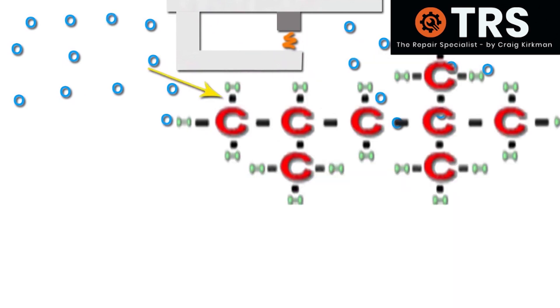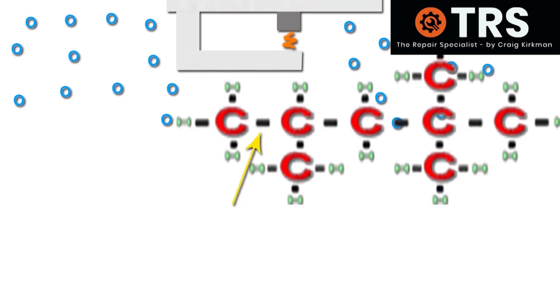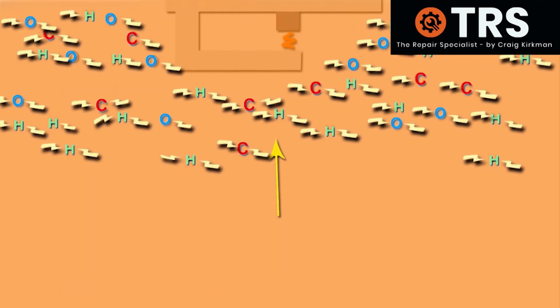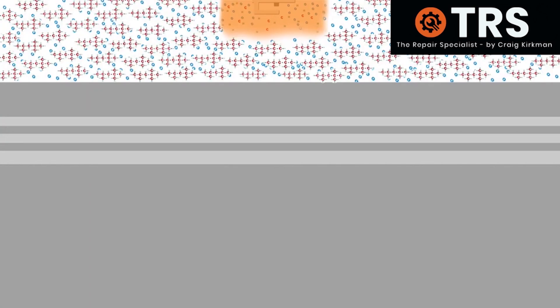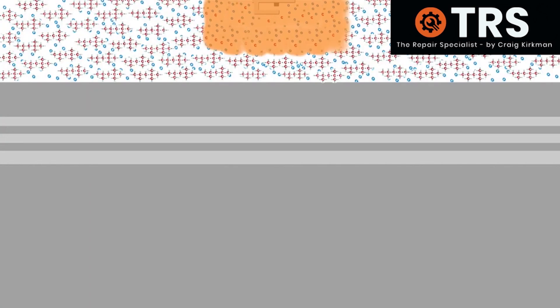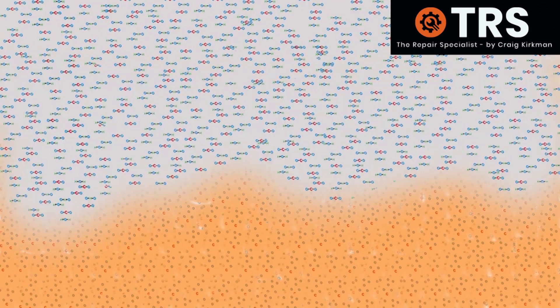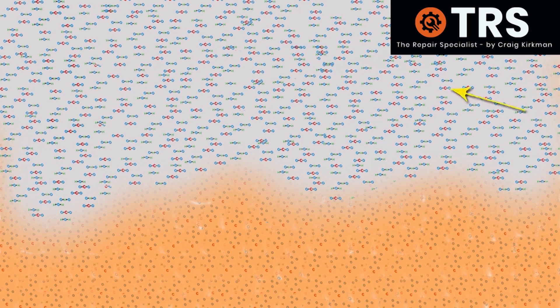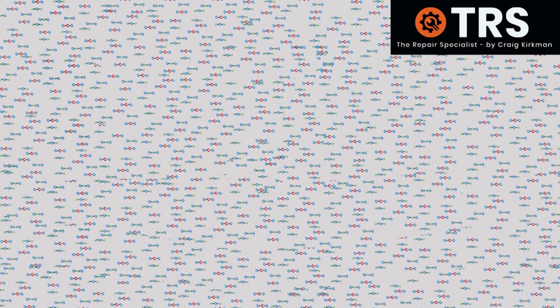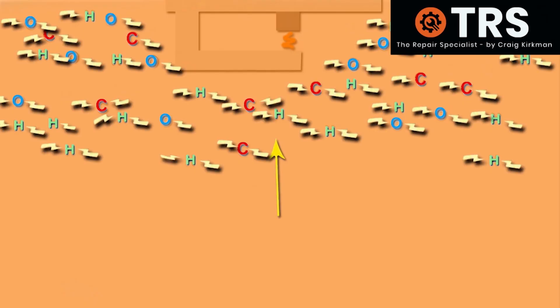The spark pushes the heat over and above what the gasoline molecule can withstand. The special bonds holding the hydrogen and carbon atoms together break due to the increased heat, and the breaking of these bonds releases a large amount of heat energy. This heat affects the nearest gasoline molecules, breaks their bonds, which produce more heat, and this continues as a wave of flame inside the cylinder, engulfing the whole interior and forcing the piston down as the gases expand.